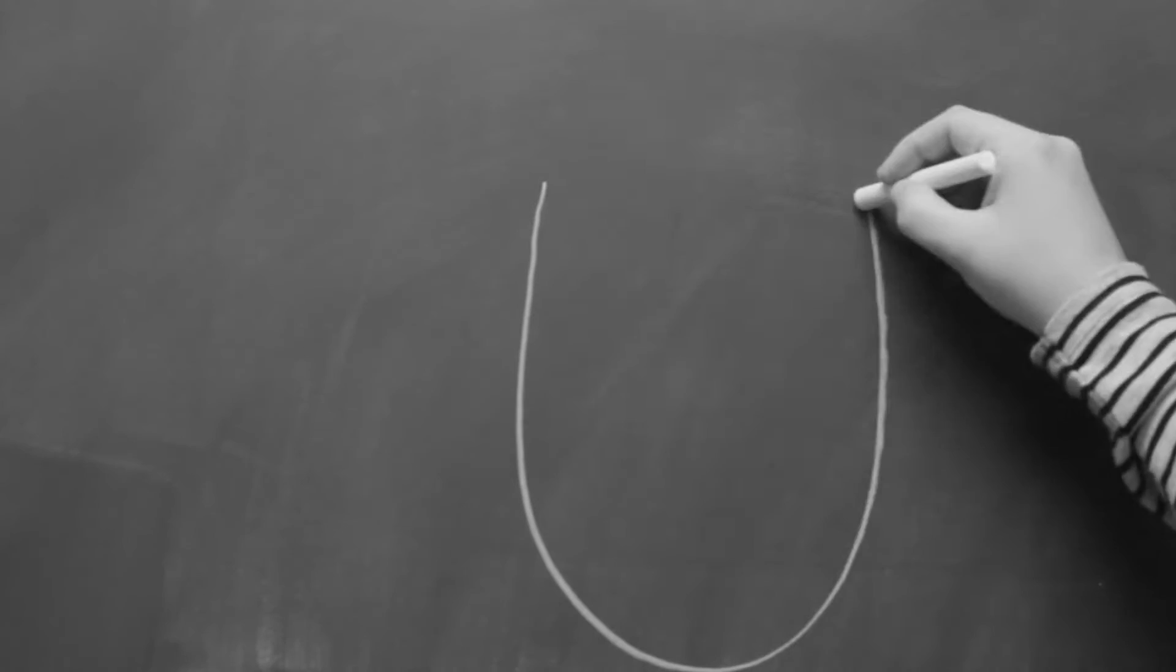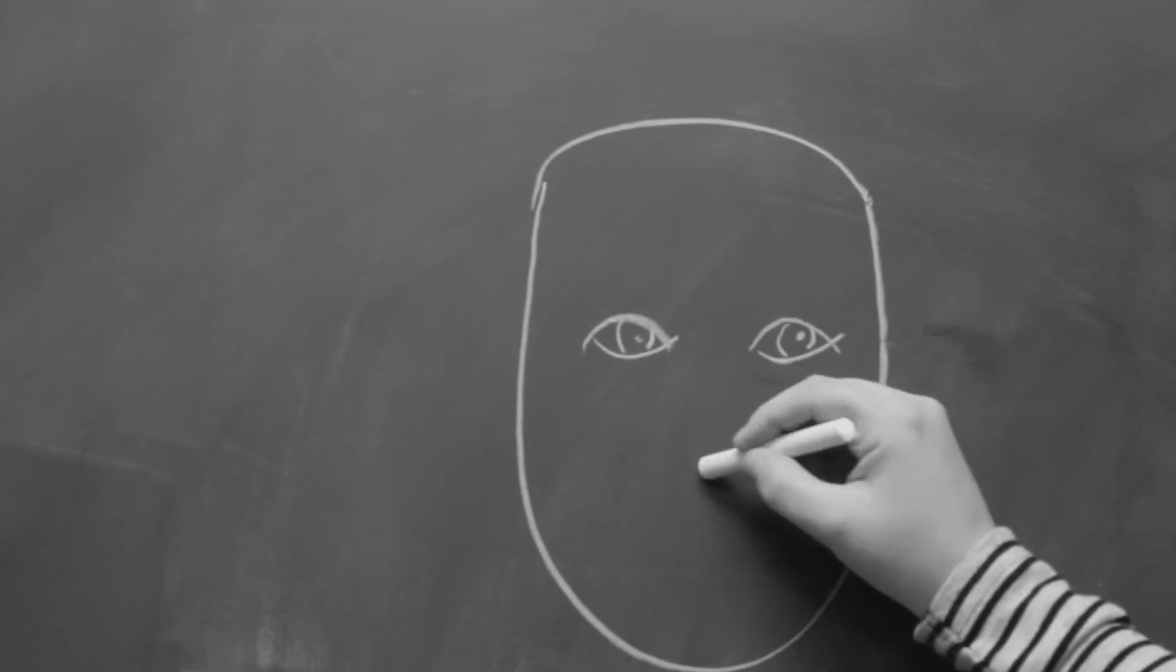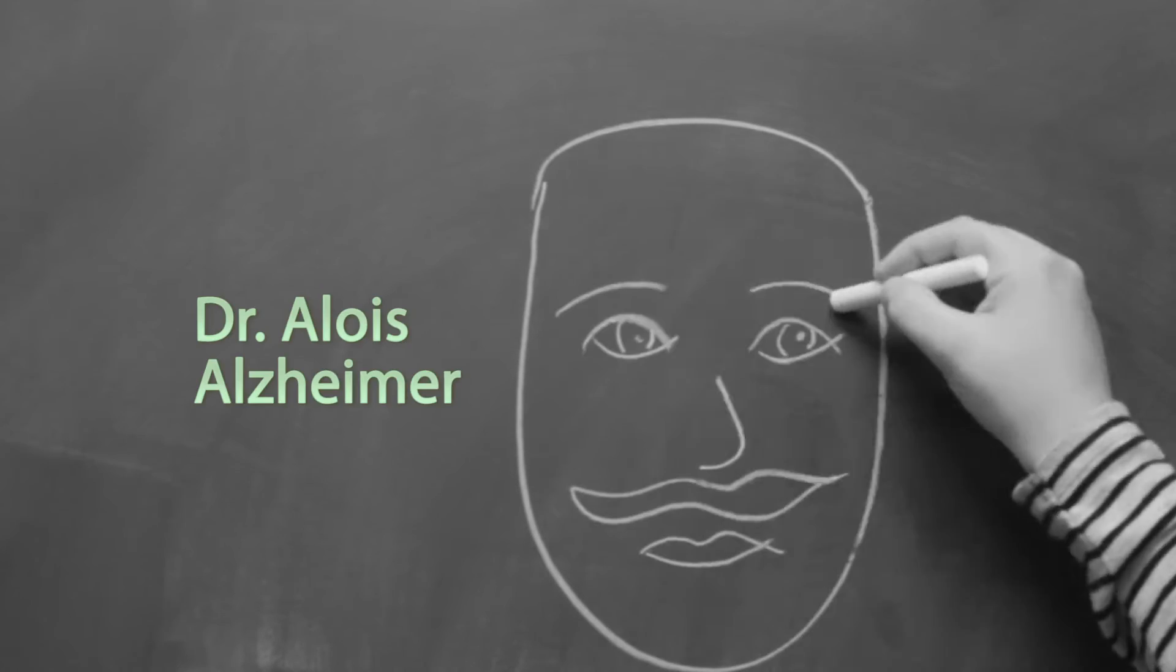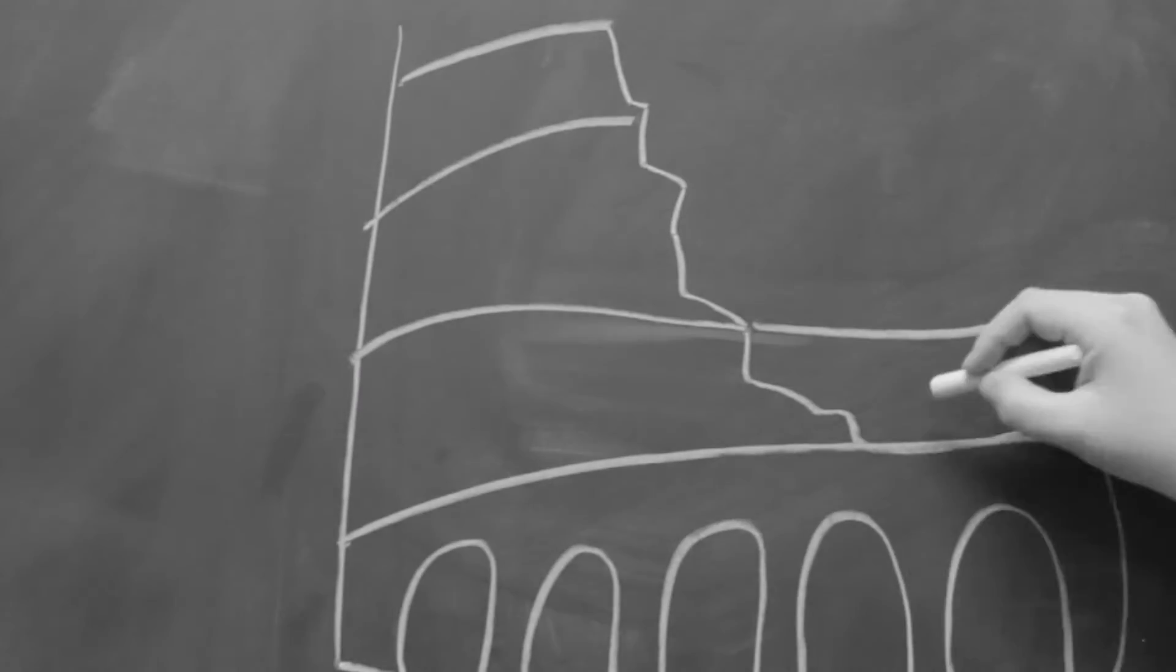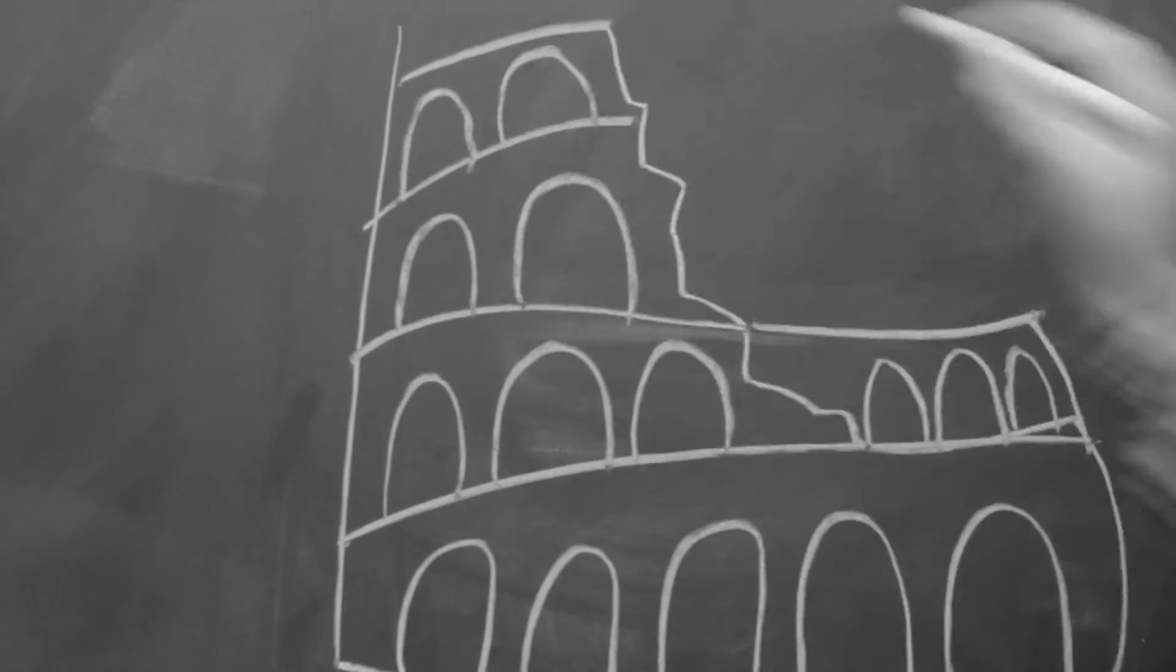This neurodegenerative case of dementia was first named by German psychiatrist Dr. Alois Alzheimer in 1901. Before this, physicians in ancient Roman Greece simply associated dementia with old age.